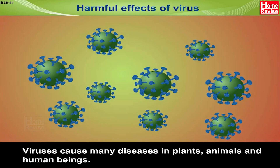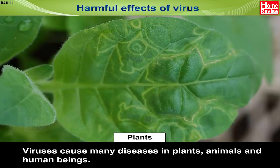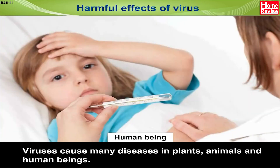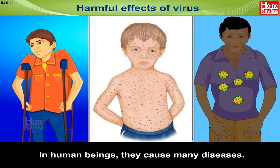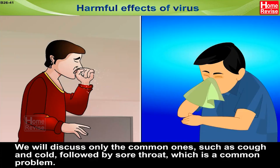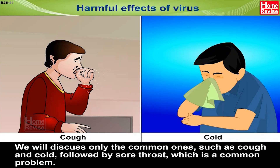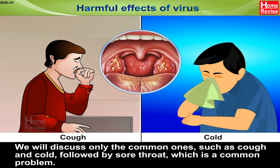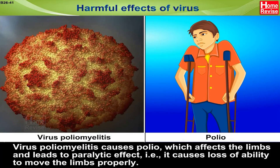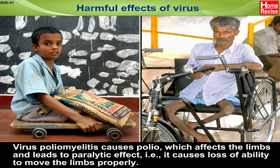Harmful Effects of Viruses. Viruses cause many diseases in plants, animals and human beings. In human beings, common diseases include cough and cold followed by sore throat. Virus poliomyelitis causes polio, which affects the limbs and leads to a paralytic effect, causing loss of ability to move the limbs properly.